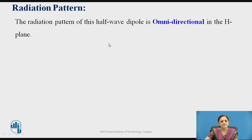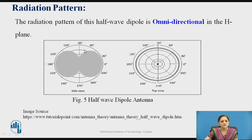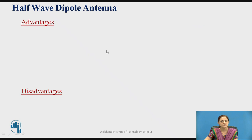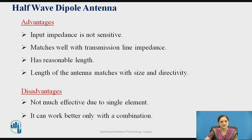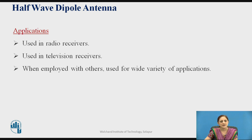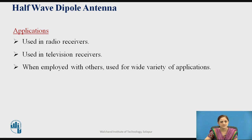The half wave dipole antenna has an omnidirectional radiation pattern. Advantages include: input impedance is not sensitive, matches well with transmission line impedance, has reasonable length, and the antenna length matches with size and directivity. Disadvantages: not much effective as a single element and works better only in combination. Applications include use in radio receivers, telephones, and television receivers, and when employed with others, it is used for a wide variety of applications.